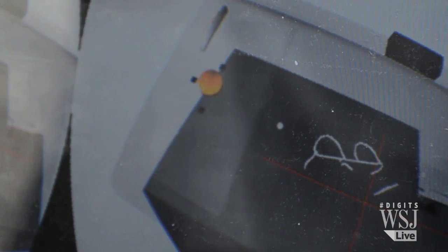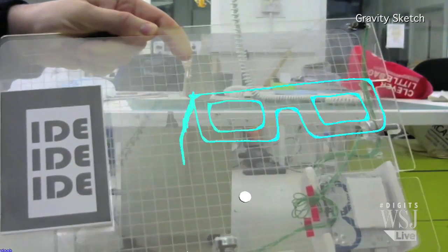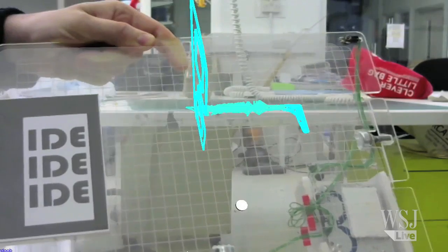Gravity Sketch isn't out yet. But a beta version is set for next year at roughly 350 pounds. Now, it's geared towards designers and architects. But Daniela says it can be used by anyone who dreams of 3D printing.